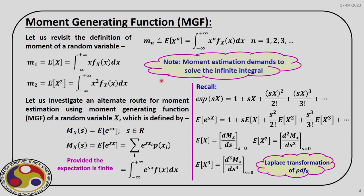This motivates us to find an alternate route for finding these moments. With that in view, we define what we call the moment generating function of a random variable. As per definition, capital M_x(s) is nothing but the expectation of e^(sx). The moment generating function is normally denoted capital M, where the subscript defines the random variable, and by definition it is the expected value of e^(sx).